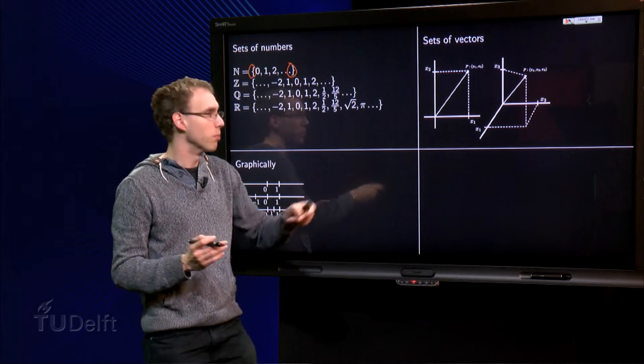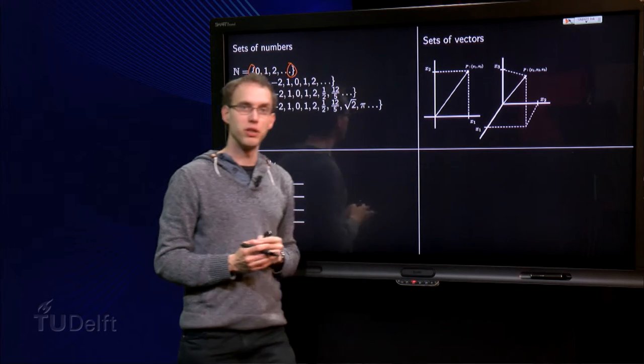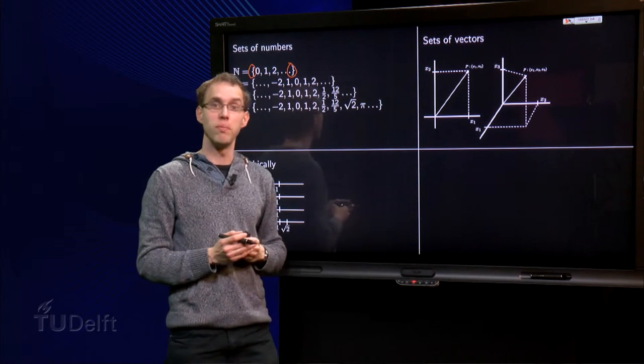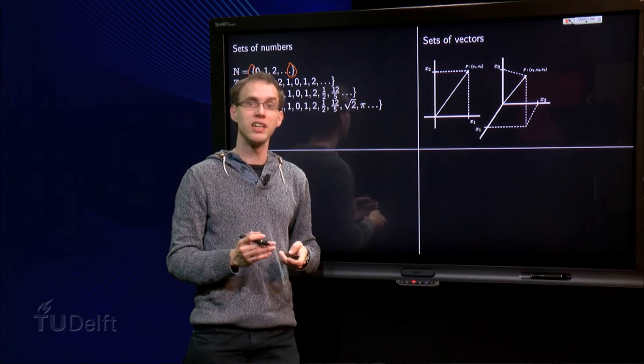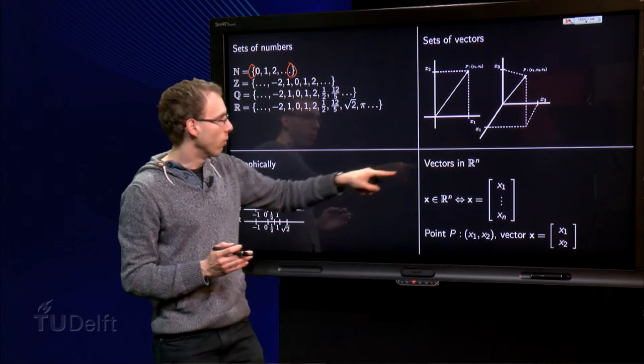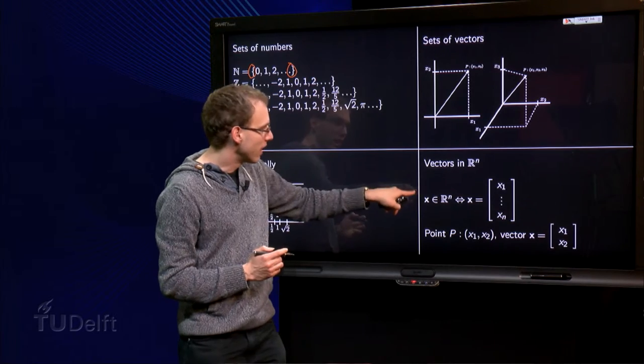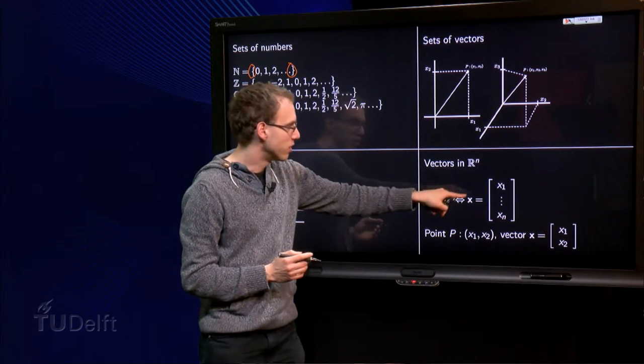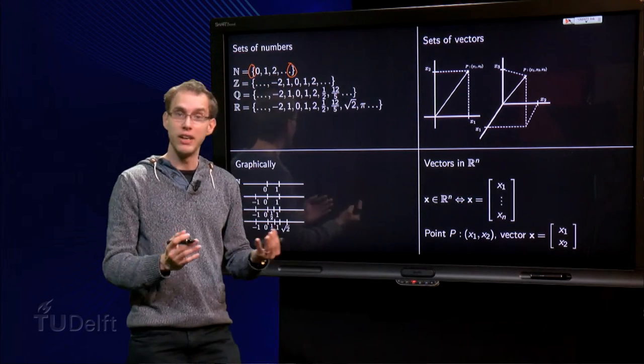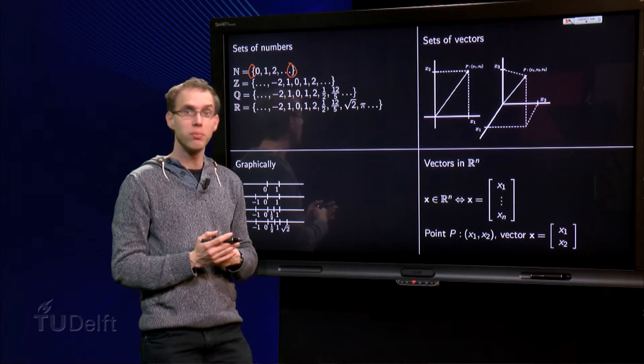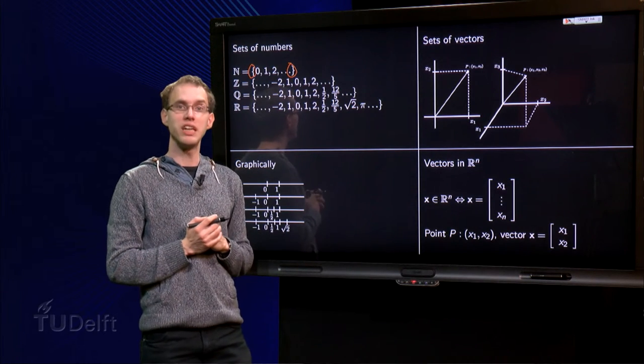And we can go on like this, well, we cannot draw it anymore, drawing a 3 dimensional picture on a 2 dimensional blackboard is already quite challenging, but if we want to go on, we can make vectors with n components. The vector has n components, that means that x is a vector consisting of n numbers. We cannot draw it anymore, but we can make computations with that.